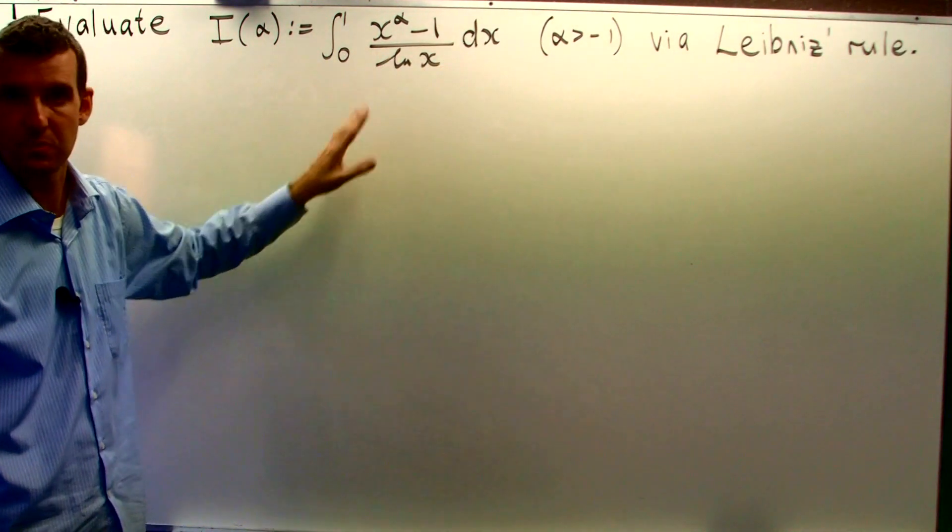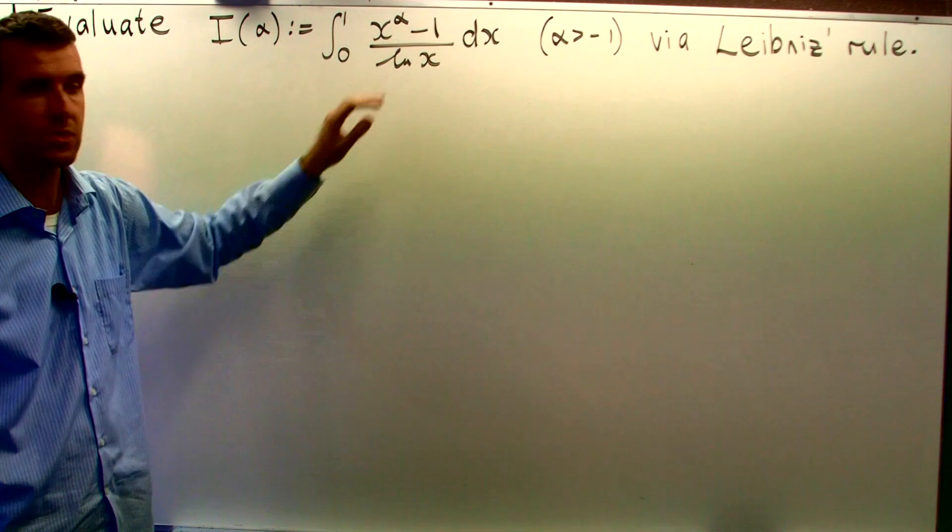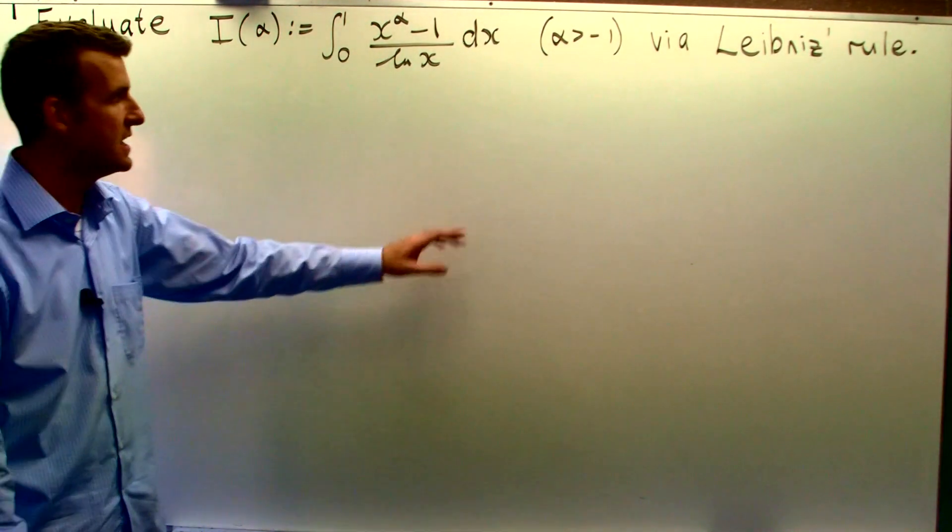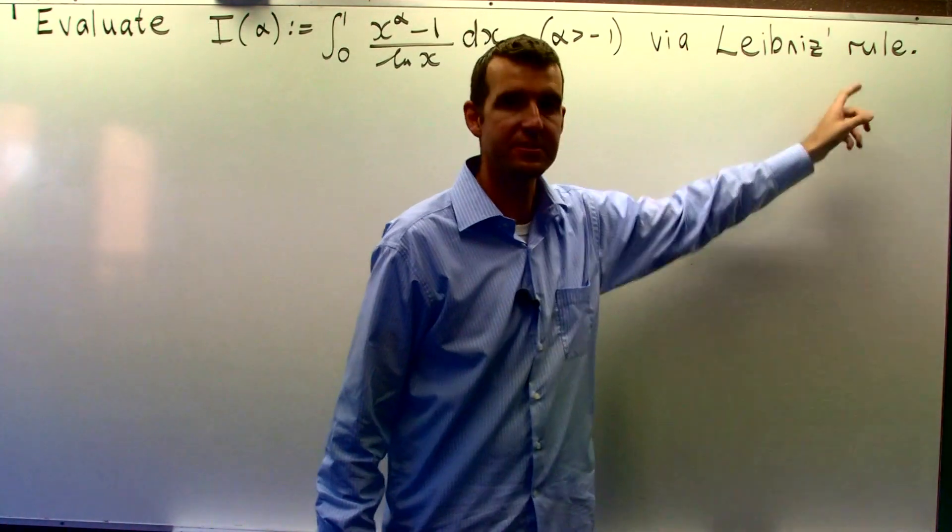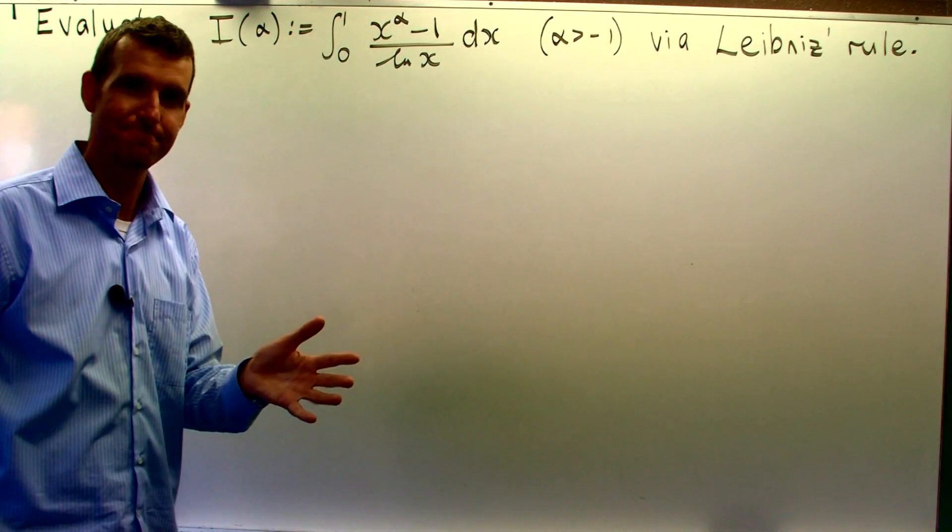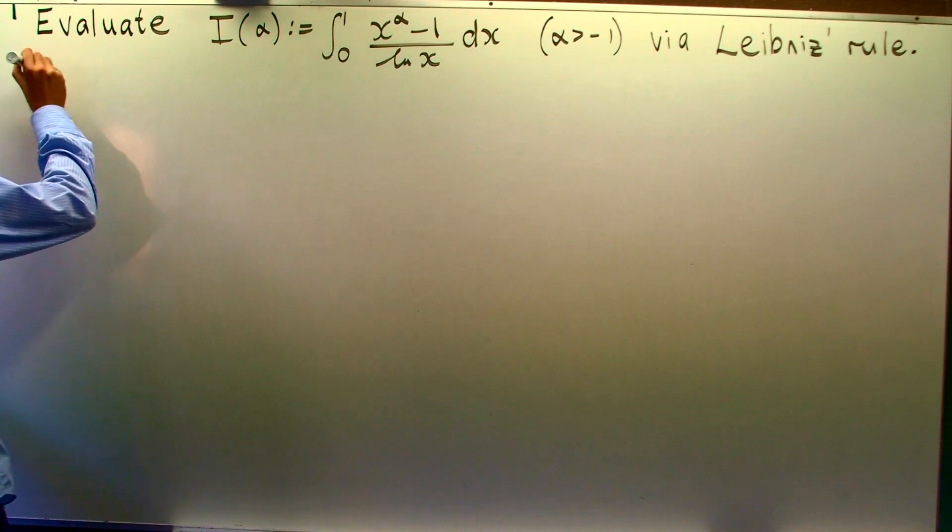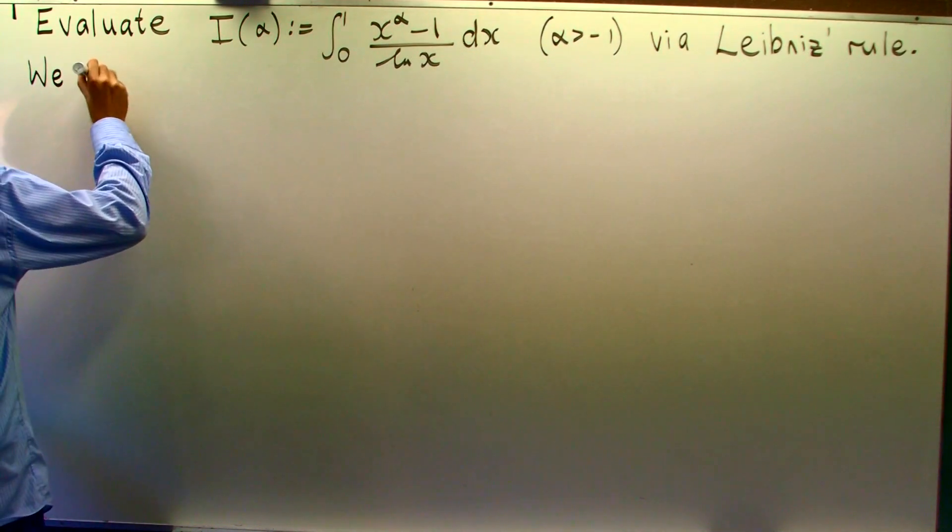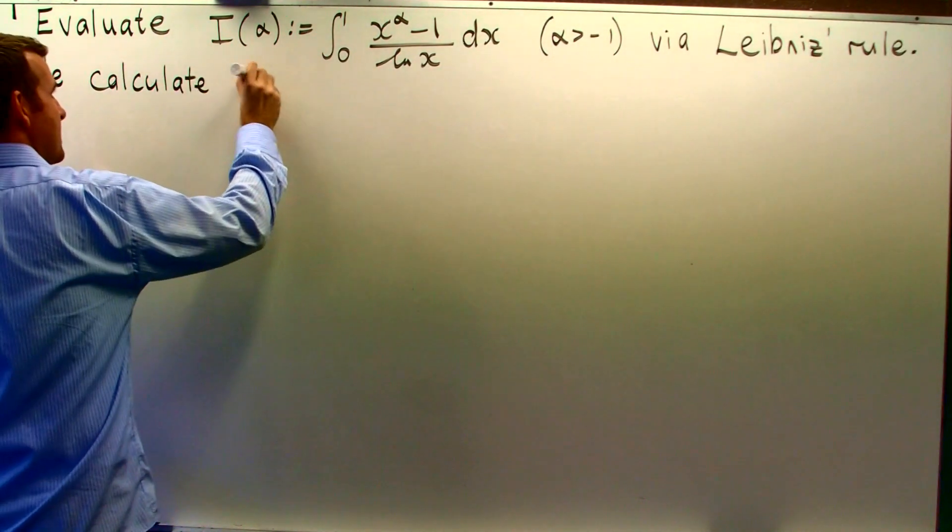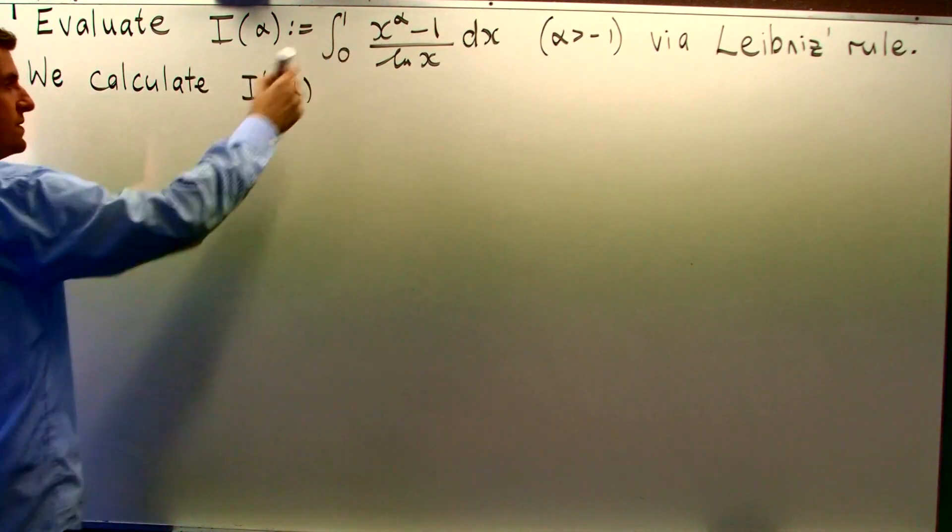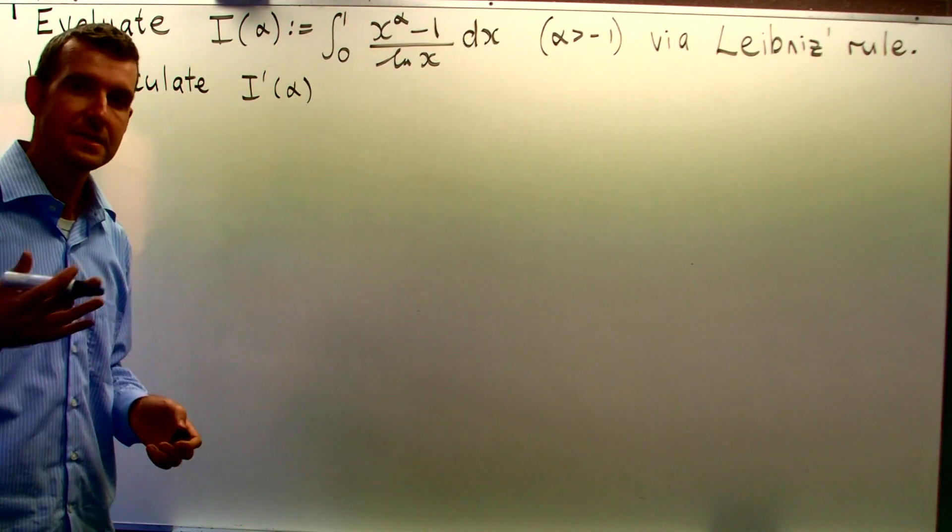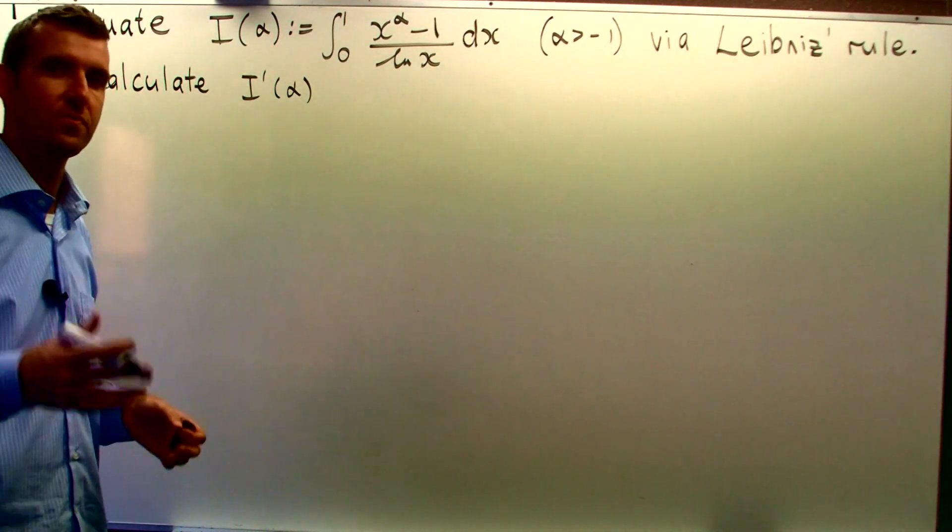Secondly, notice that this is a difficult integral. It's very hard to integrate this directly, to find an anti-derivative and then to just solve the problem. So what we're going to do is apply Leibniz rule, which actually involves differentiating integrals. So how do we do it? Well, the basic idea is to calculate the derivative of what we're given.